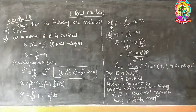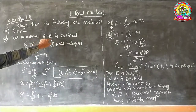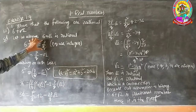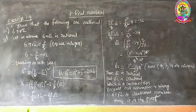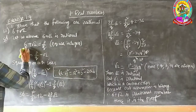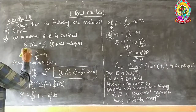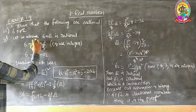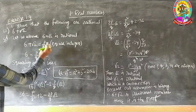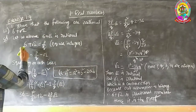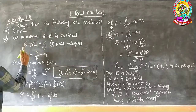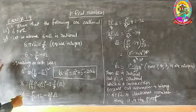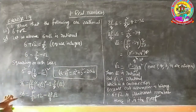To summarize: we assumed 6 plus root 2 is rational and expressed it as P by Q. Remember: if both numbers are related by addition, you have to watch the number having the root and transpose it to the right-hand side. The number which does not have a root should always stay on the right-hand side. Then follow the procedure and square both sides.